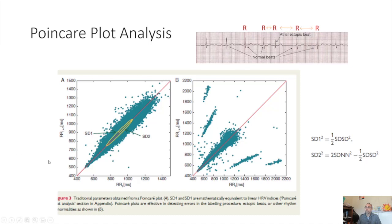Another methodology is the Poincaré plot analysis. What this does is map out one RR interval compared to the subsequent RR interval. From this graph you get these plots, and you try to extract the elliptical fit. You then extract SD1, which is the short axis of the ellipse, and SD2, which is the long axis of the ellipse. From my perspective, the Poincaré plot is most useful for detecting noise or ectopic beats.